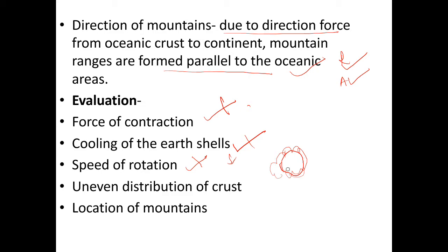According to this theory there should be a uniform distribution of continents, but in reality continents are not uniformly distributed — there is an uneven distribution of oceans and continents, which was not agreed upon by many scholars. Regarding the location of mountains, this theory says they should always be parallel to the oceans, which can be seen with the Rockies, but not with the Himalayas and Alpine mountains, which are not parallel to oceanic areas.